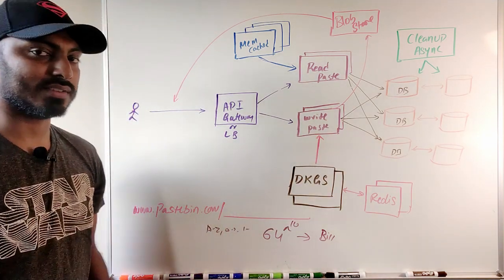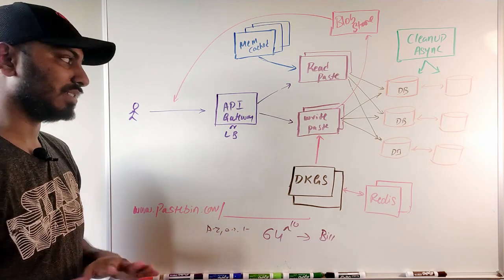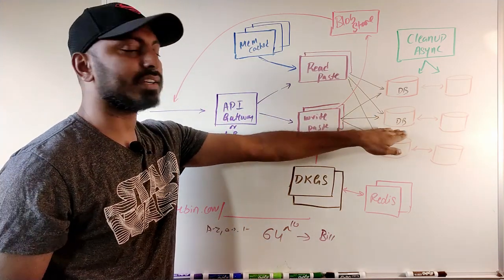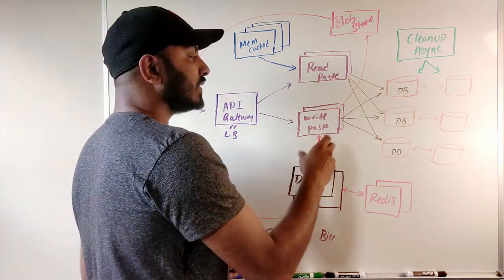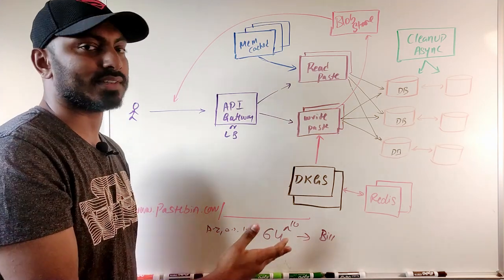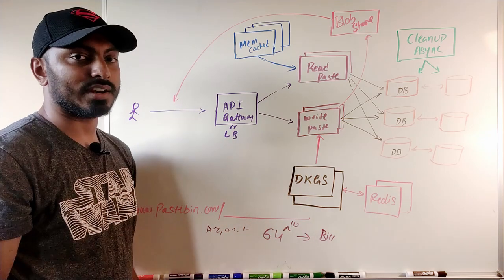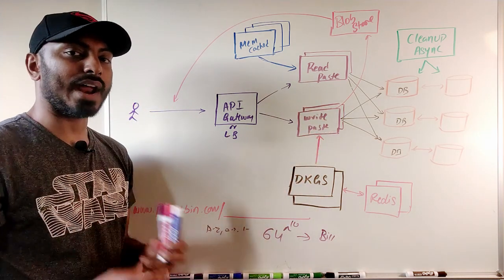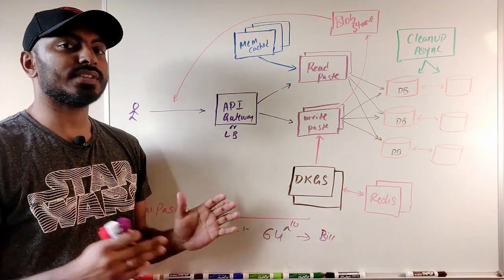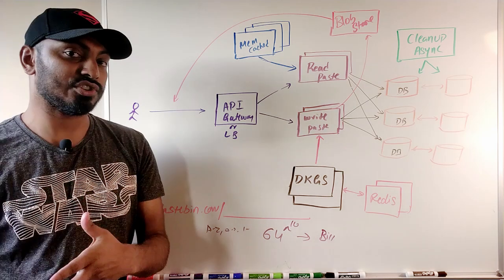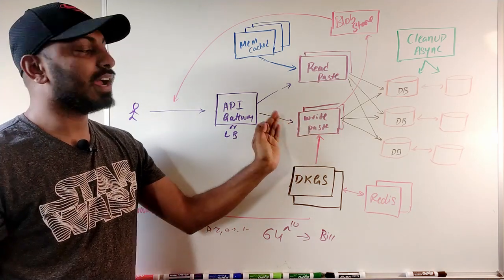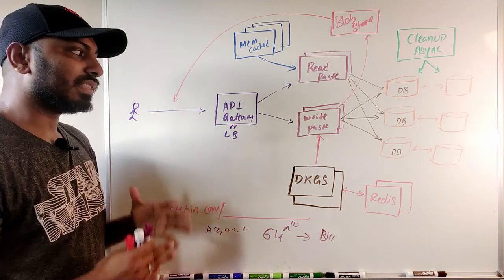We need keys that are equal length and unpredictable. One approach: have the write API generate a random string and attempt to insert it; if there's a duplicate key error, regenerate and retry. However, this is problematic when many keys are already used, as collisions become more frequent. This violates SLA — if our target is 200ms per write, repeated retries can cause some writes to be much slower and unpredictable.